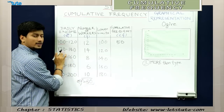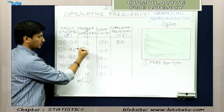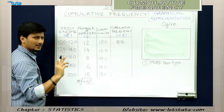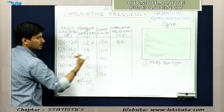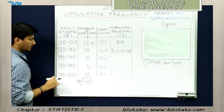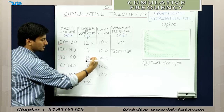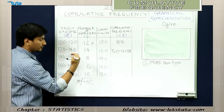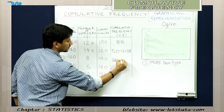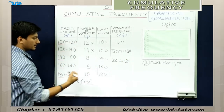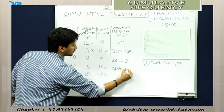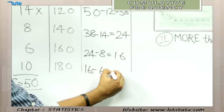The cumulative frequency for everything more than 120 will be 14 plus 8 plus 6 plus 10, excluding 12 because it falls below 120. That means 50 minus 12 gives us 38. Similarly, for more than 140, we calculate frequencies from 140 to 200 — that is 8 plus 6 plus 10 — excluding 14 and 12. So 38 minus 14 gives us 24. For more than 160: 24 minus 8 equals 16. For more than 180: 16 minus 6 gives us 10.